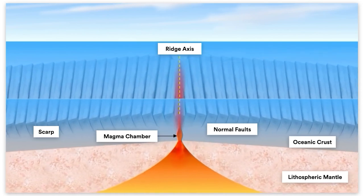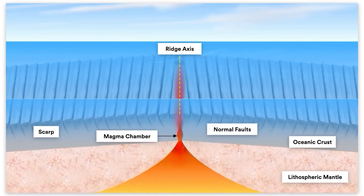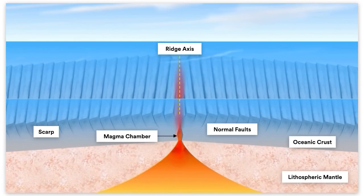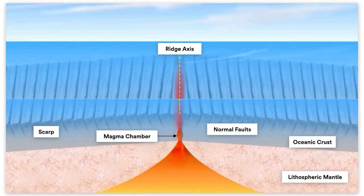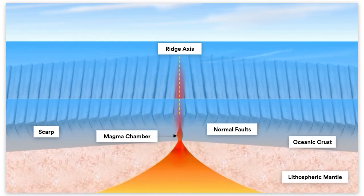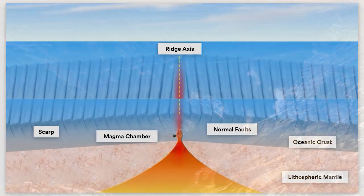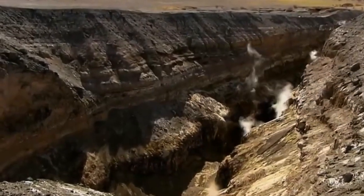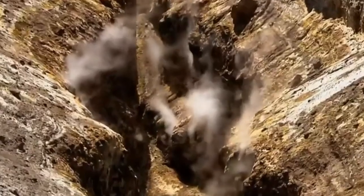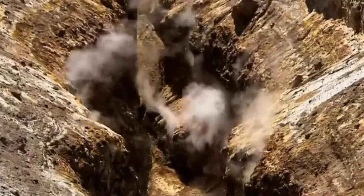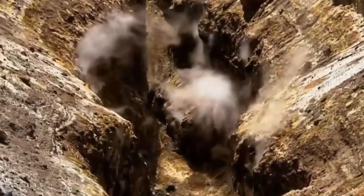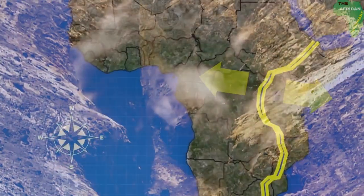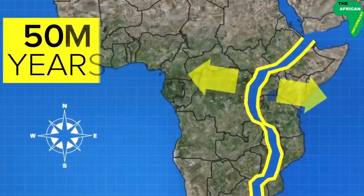But divergent boundaries aren't just underwater. On land, the East African Rift Valley is a perfect example of a divergent boundary that could eventually split the African continent.